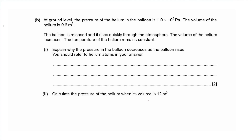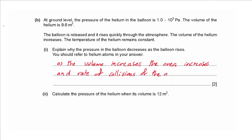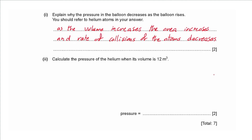Part b: at ground level the pressure of the helium is 1.0 × 10⁵ Pa and the volume is 9.6 m³. The balloon rises, the volume increases, and temperature remains constant. Explain why pressure decreases as the balloon rises. As the volume increases, the area increases and the rate of collisions of the atoms with the walls decreases, so pressure decreases.